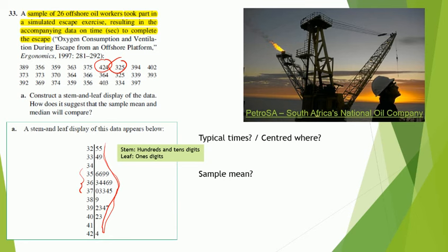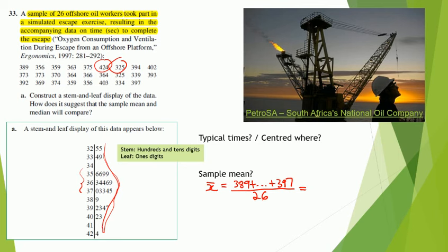Let's calculate that mean. We use the symbol x̄. In this case we have 26 observations, so we look at the total. The sum of all values from 389 to 397 divided by 26 yields a mean value of 370.6923. The shape, as we said, is more or less symmetrical. So what do you guess — is the median going to be close to the sample mean or not? We'll address that a little later on.